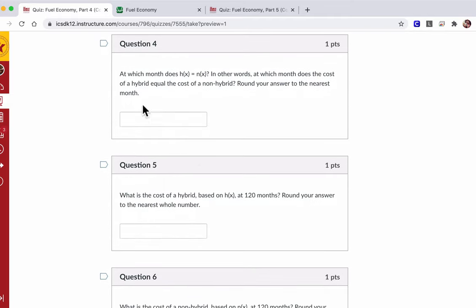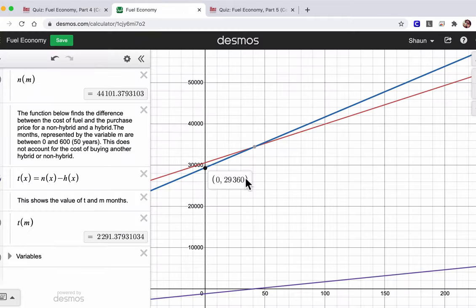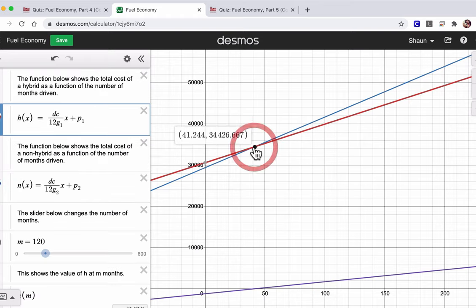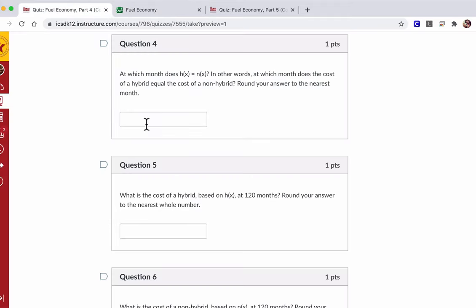So in question four, it says, at which month does h of x equal n of x? In other words, at which month does the cost of a hybrid equal the cost of a non-hybrid? Round your answer to the nearest month. And again, it's saying cost, that's including gas. Now, in this program, in Desmos, if you want to see, it's already kind of doing it. It's got that point right there where they're meeting each other. But you can just click on the graphs, and it will show you the intersection point. And that intersection point is critical. It shows you this many months, 41.244 months. They both will cost $34,426.67, essentially, right? It's the nearest penny. And so that means, in this case, how many months will it take before they're equal? Well, it's that number right there. It's 41. That's the month.